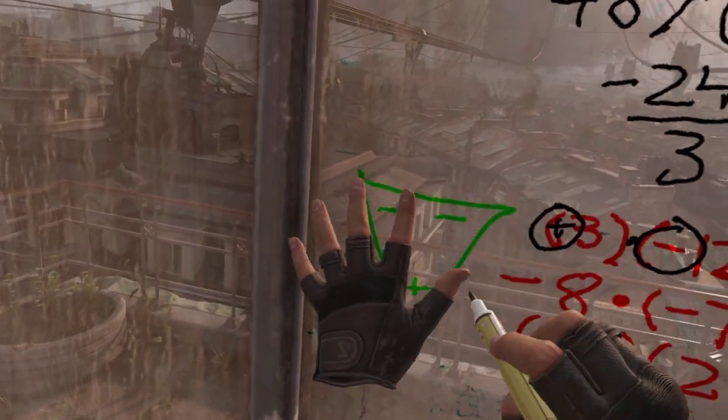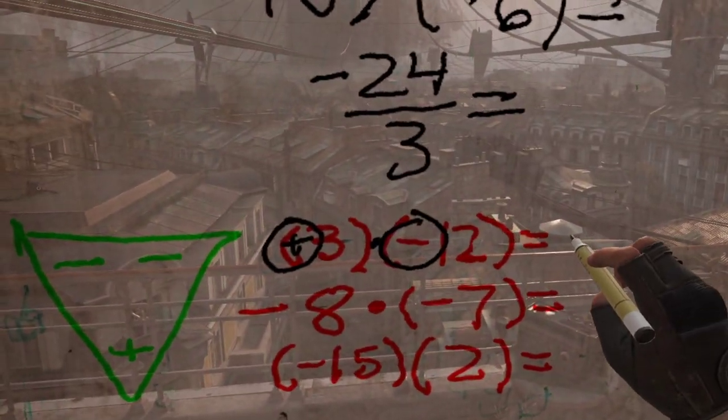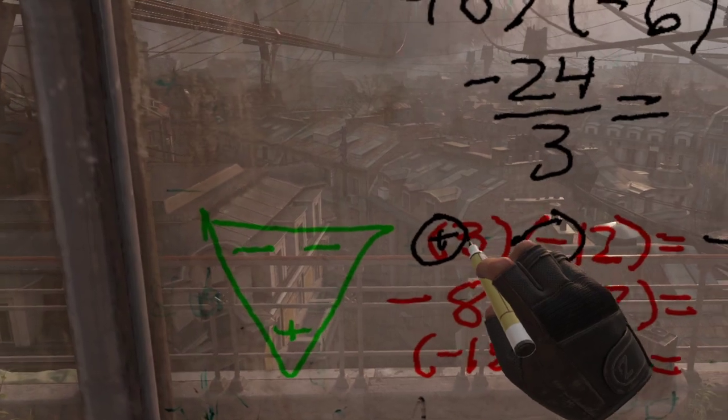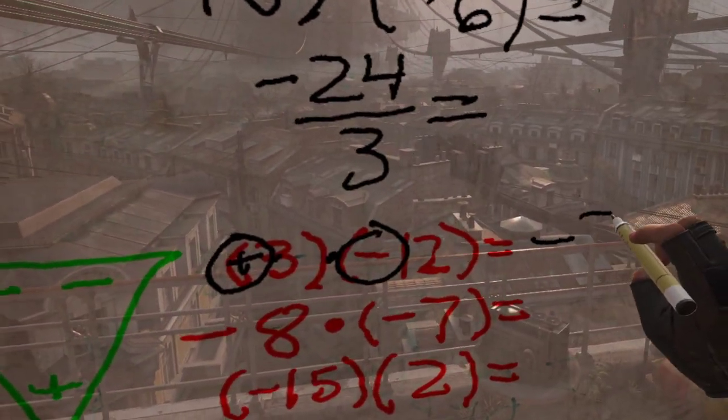What's left? It's a negative. That means my answer is negative. And what's 3 times 12? 36.